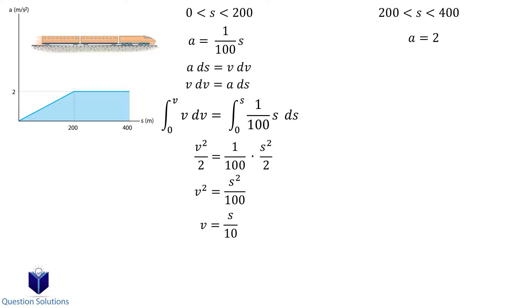Solving this integral and isolating for v by taking the square root of both sides gives us s over 10. Now we need to figure out the velocity at 200 meters, so that we can use it as the lower bounds for the next integral.